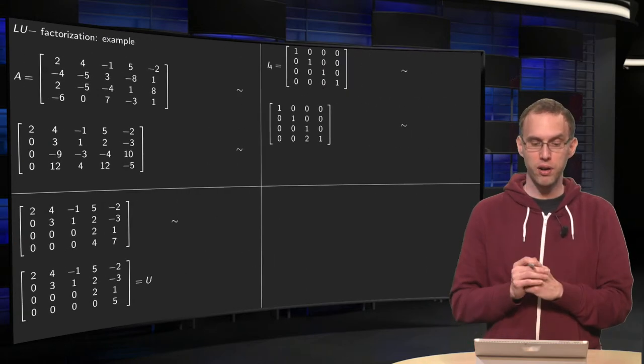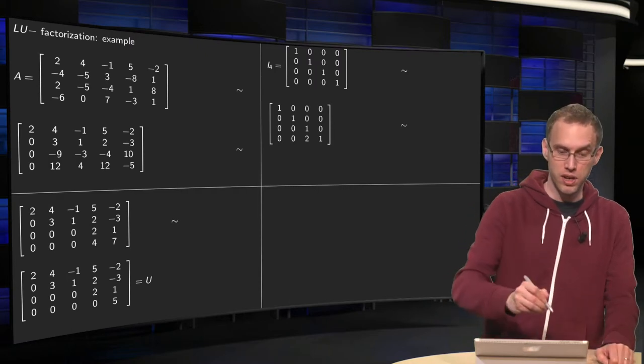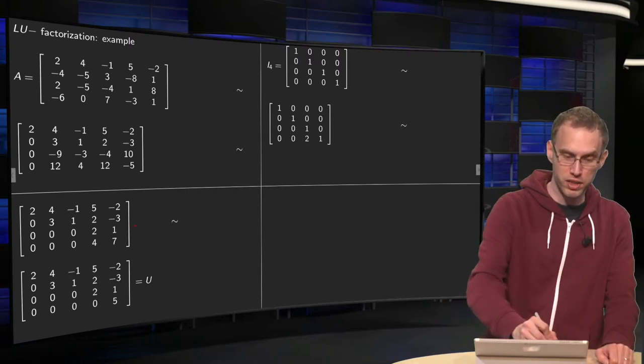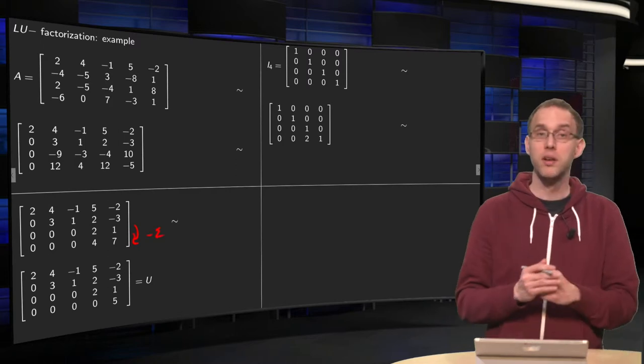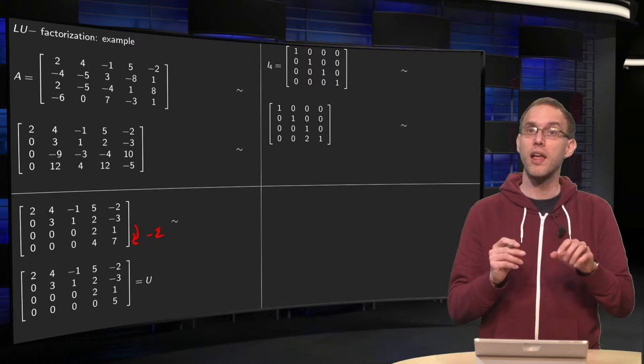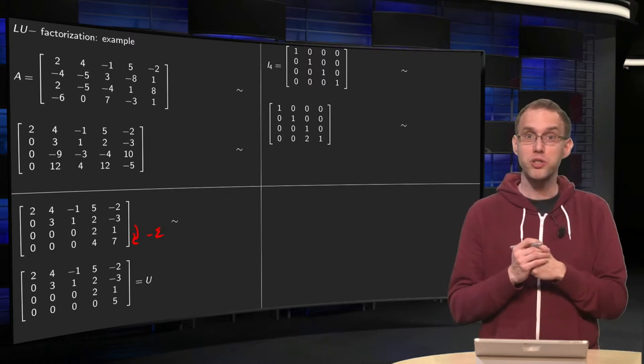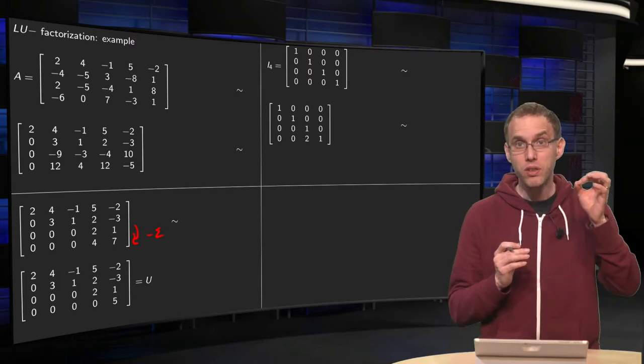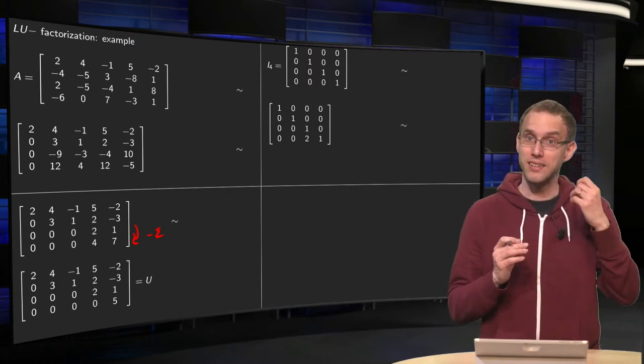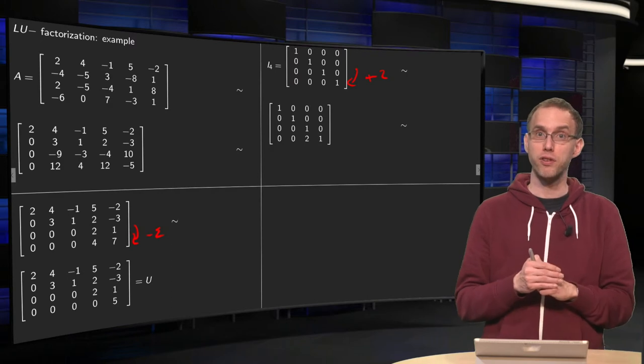How do we find the L matrix? We start with the last operation, which was adding -2 times the third row to the fourth row. We do the inverse. So instead of adding -2 times the third row to the fourth row, we now add the third row 2 times to the fourth row. We do a +2. And that's our first step.